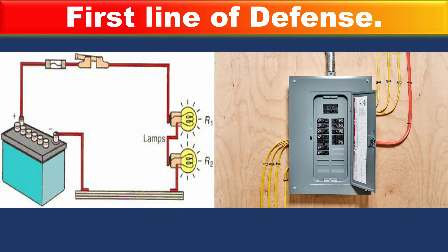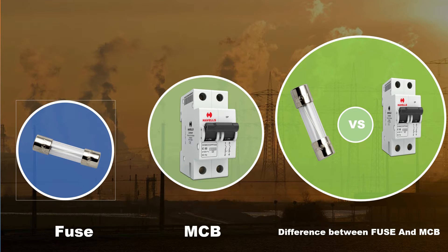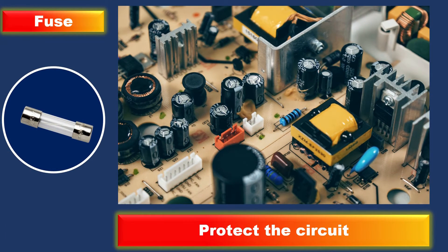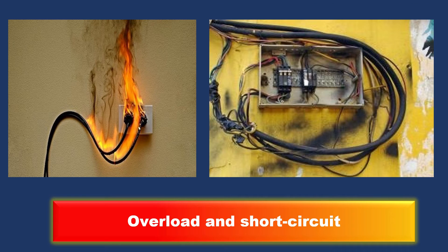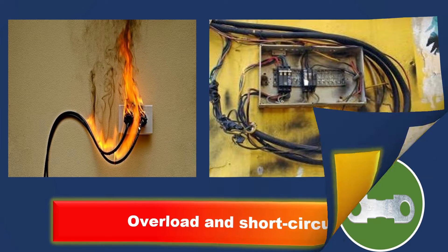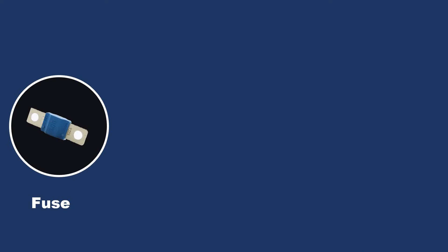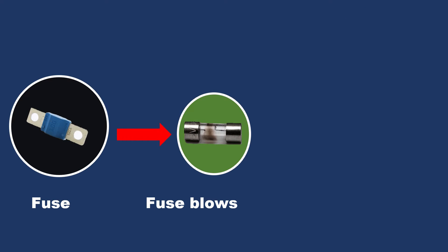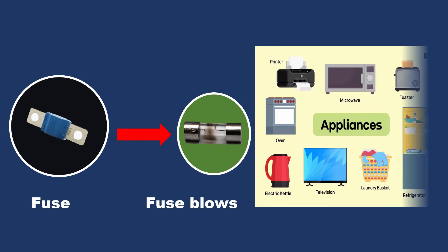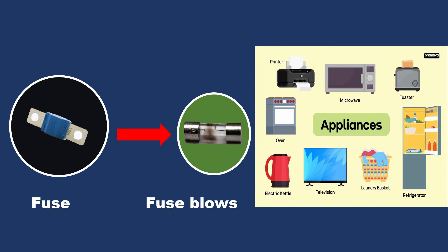First, let's talk about the fuse. A fuse is a small device designed to protect an electrical circuit from overloading. It consists of a metal wire or strip that melts when too much current passes through it. When a fuse blows, it breaks the circuit and stops the flow of electricity.